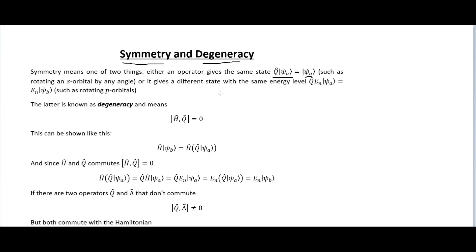Or symmetry gives a different state with the same energy level - so we act on this ket vector and we end up with the same energy level. This would be the same as rotating the p orbitals. The p orbitals do have a directionality; they have these two lobes on them. If you rotated this to some degree theta, it's going to have a different orientation and be a different function, but it'll still have the same energy, giving energy degeneracy. That's why the latter is known as degeneracy.